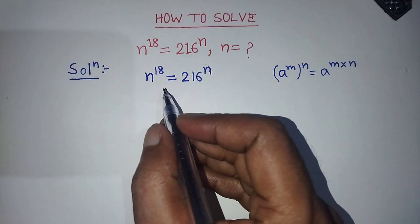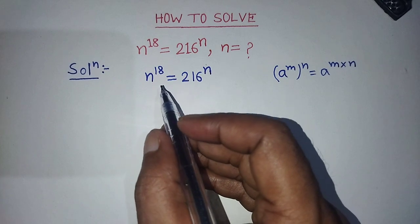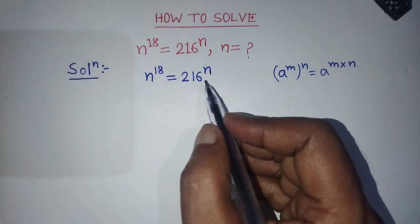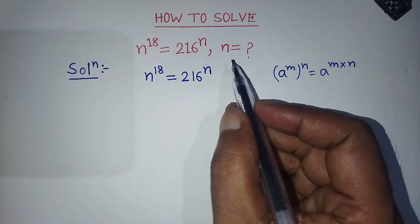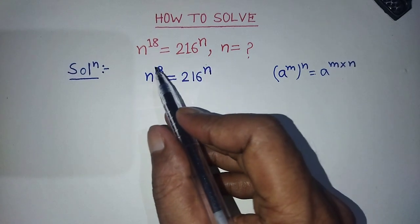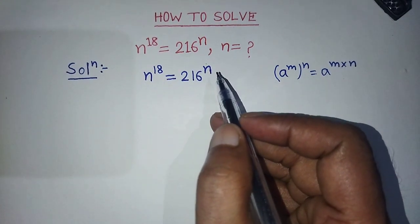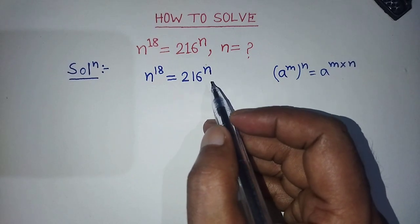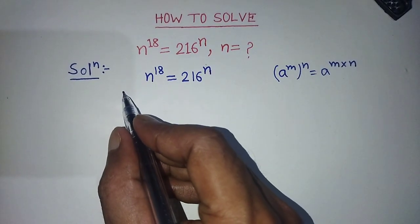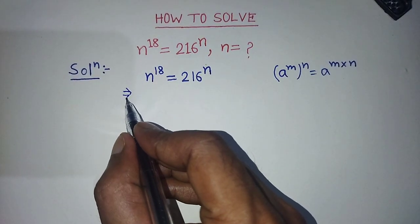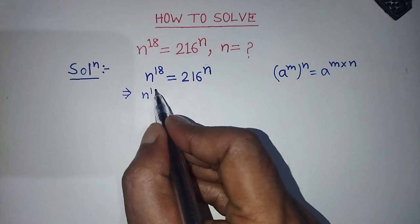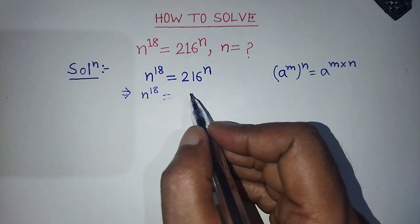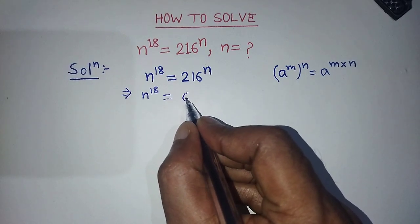Our given exponential equation is n to the power 18 is equal to 216 to the power n. To find the value of n, first of all we have to write 216 in exponential form. So on the left hand side we write n to the power 18, and on the right hand side, in the place of 216, we write 6 to the power 3.